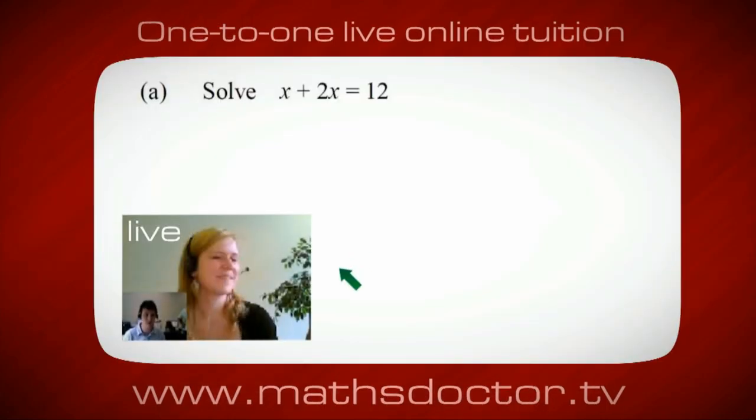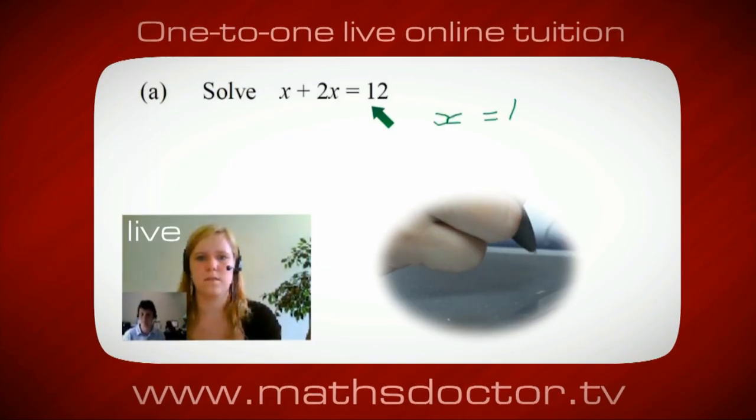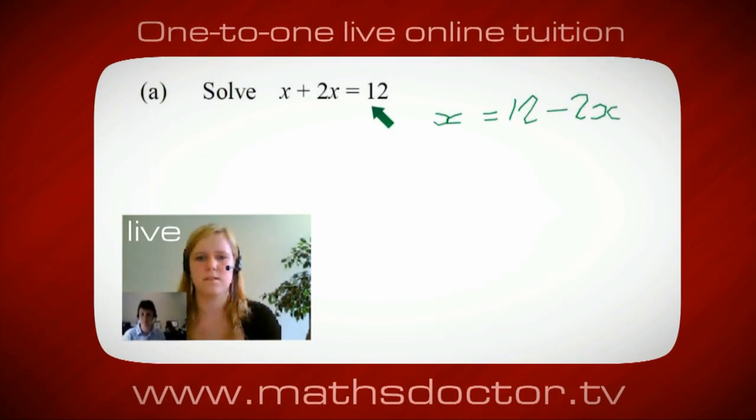Okay, Marie, so let's have a look at this one. So solve x plus 2x equals 12. So what do you think you do first? Okay, well, I want x on its own, so I would put x equals 12 minus 2x.